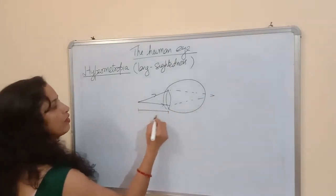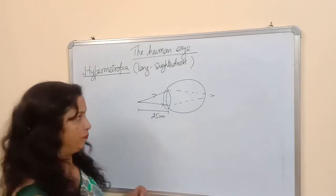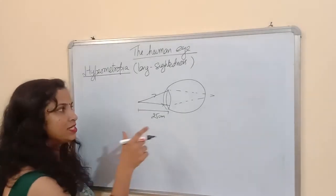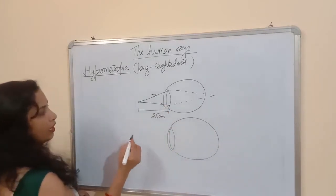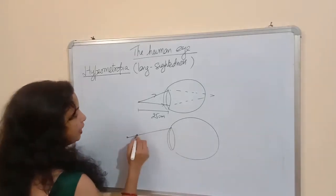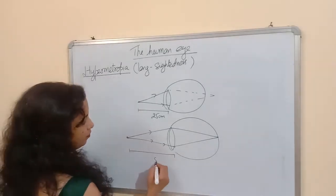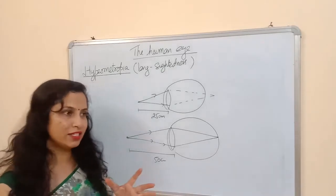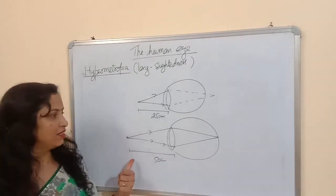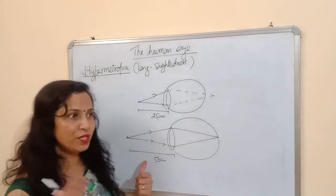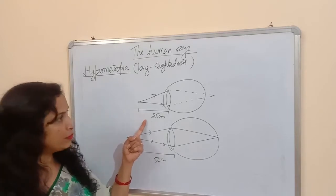The normal least distance of distinct vision is 25 cm. A normal eye can see a nearby object clearly at 25 cm. But for a hypermetropic eye, this near distance becomes larger — for example, the near point may be 50 cm. It means that person can only see a nearby object clearly if it is placed at 50 cm or more. When the object is placed at 25 cm, the image is formed behind the retina.